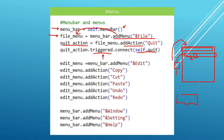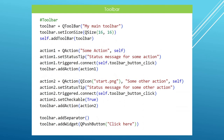Once you have the menu bar you can add menus to it, and once you add a menu you have a menu object you can add actions to. We are repeating the same process adding an edit menu, and in this edit menu we will add actions for copy, cut, paste, undo, and redo. We will see these in our user interface and can connect slots to them.